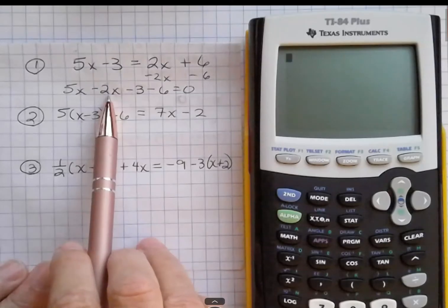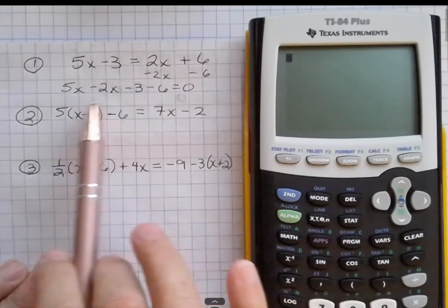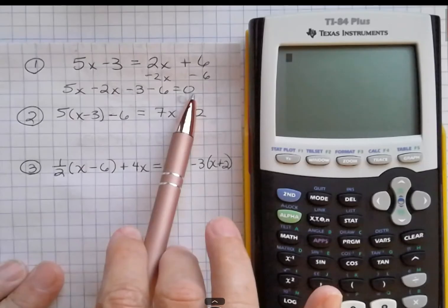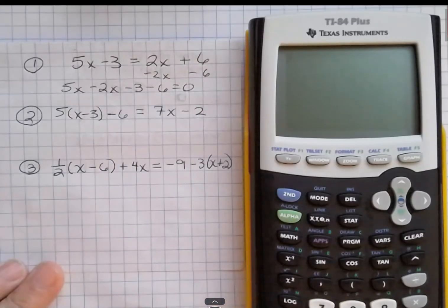So I could subtract 2x from both sides and subtract 6 from both sides, and then I would get my equation to look like this, which is how the calculator is going to want it.